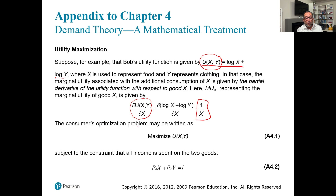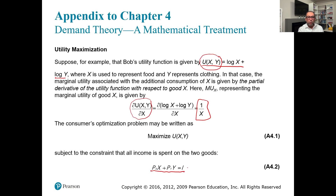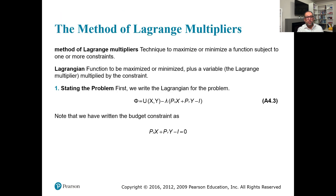The consumer's optimizing problem may be written as maximizing utility subject to the budget constraint: Px·x + Py·y = I. We already know the assumptions — there is no saving and no credit — so whatever income we have is spent on these two products.